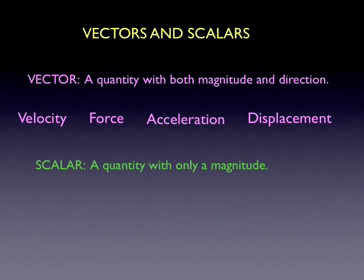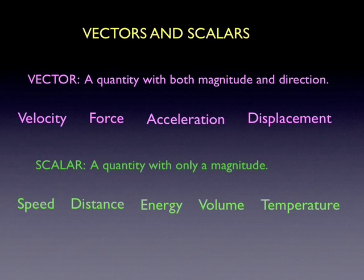Scalars have no direction. Speed is an example. Speed is a scalar begins with S. Velocity as a vector begins with V. They measure the same thing, except that velocity has a direction. Distance is a scalar. There's no direction involved. Displacement is the same as distance, except it has a direction. Energy, volume, temperature. All scalars, no direction.